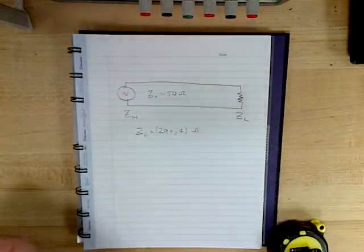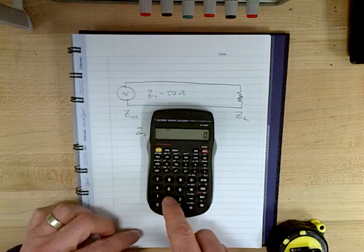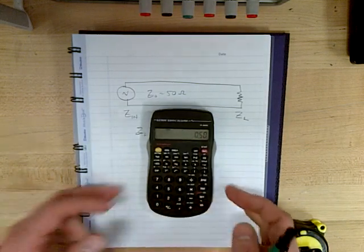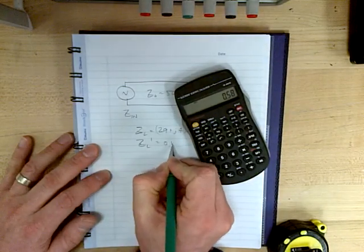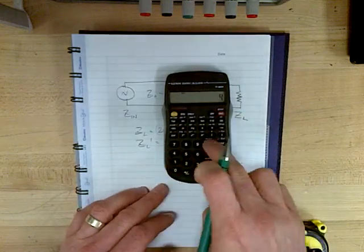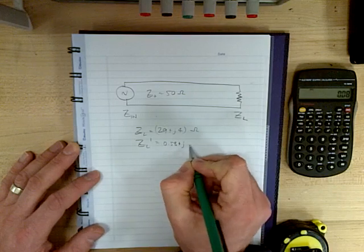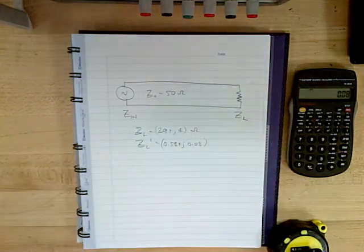And then I can normalize that for a 50 ohm Smith chart. So 29 divided by 50, that's 0.58. So normalized 0.58 plus J4 divided by 50, 0.08. So that's the normalized impedance.